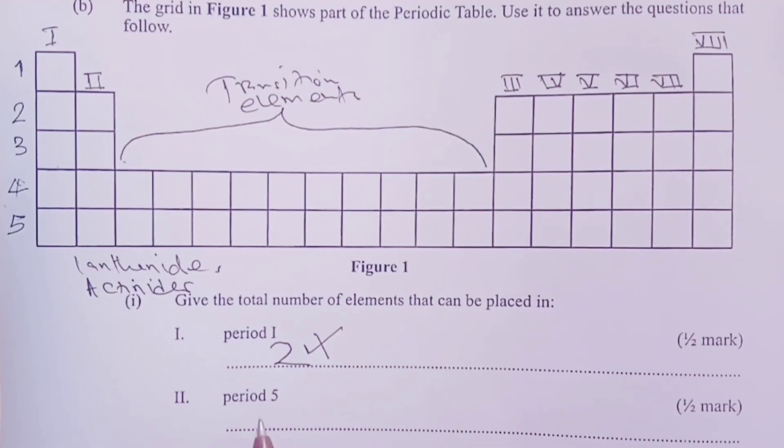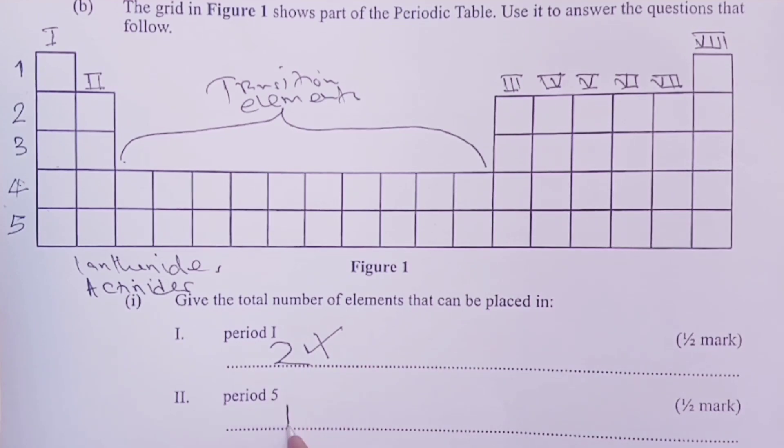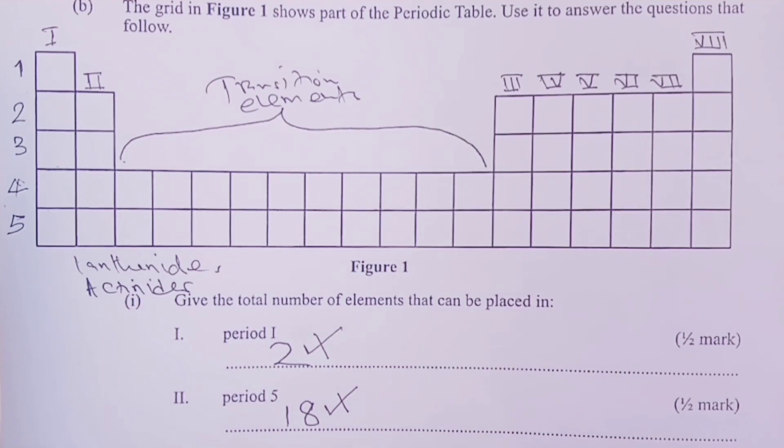For period 5, I know most students went for 8. But today we've known that transition elements in period 5 will occupy 10 groups, so that makes a total of 18 elements for period 5 for the next half a mark.